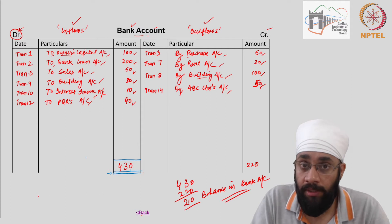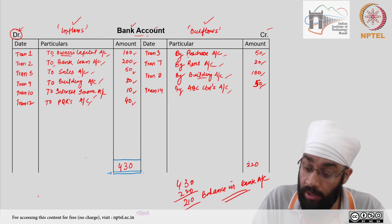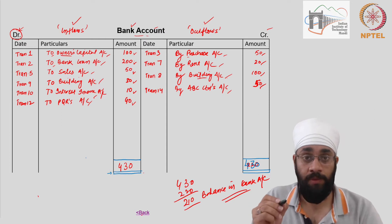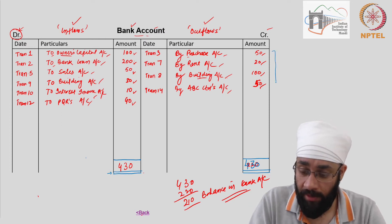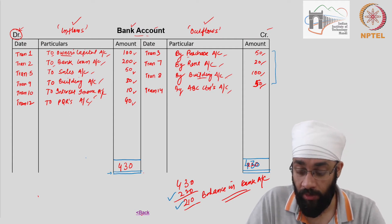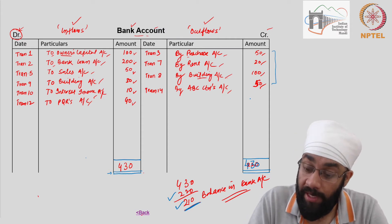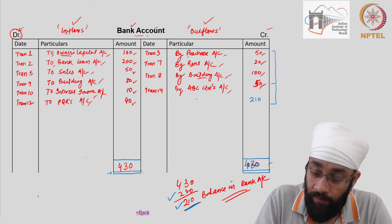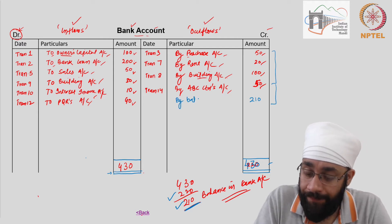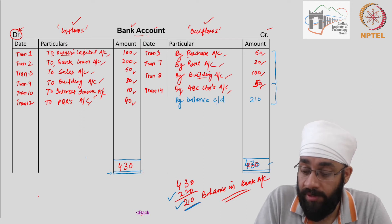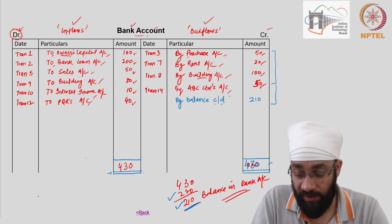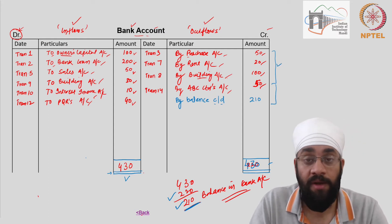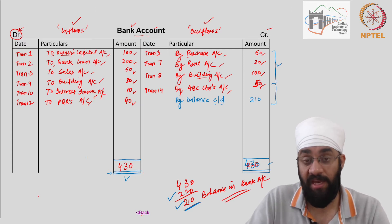430 is the total on the debit side and I'm going to write the same total on the other side — 430. However, we know the total on the credit side is only 220 and there is 210 which is the balance left. We're going to write that balance here: 210, and now when you sum this up it will be 430. We write 'by balance carried down' — c/d stands for carried down. It simply refers to the process where we take the total on the debit side and deduct the total of the credit side.